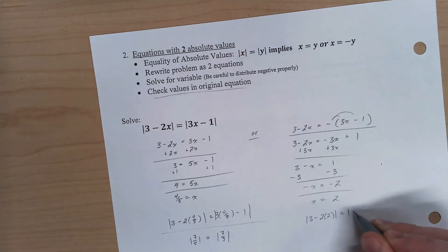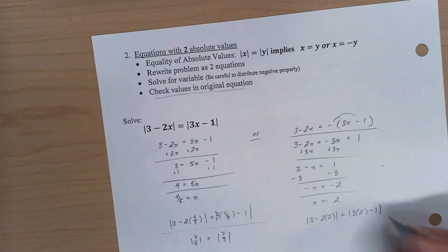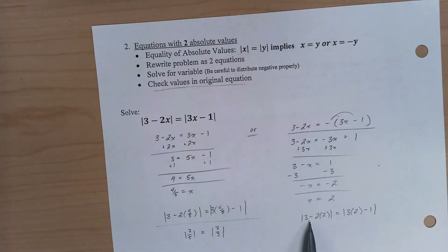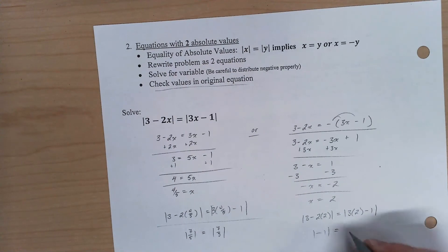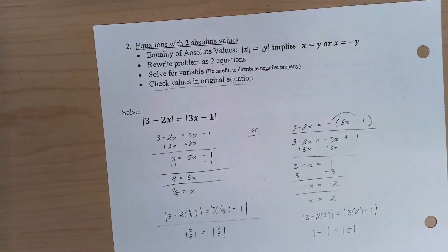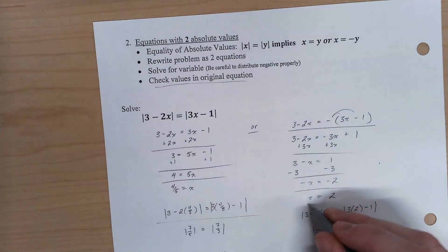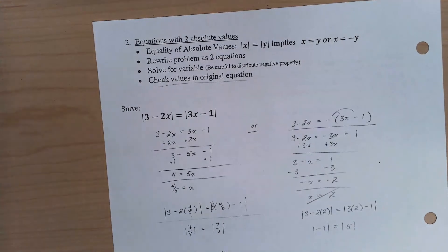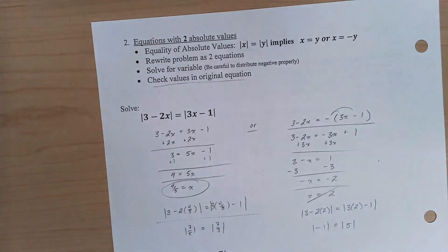We'll check 2. So if I plug 2 on in there, it looks like I'm going to end up with the absolute value of negative 1 and the absolute value of 5 for that one. So it actually turns out that 2 doesn't work. So this can't happen. We can't end up with no good solutions. So 4 fifths is actually my only solution here.